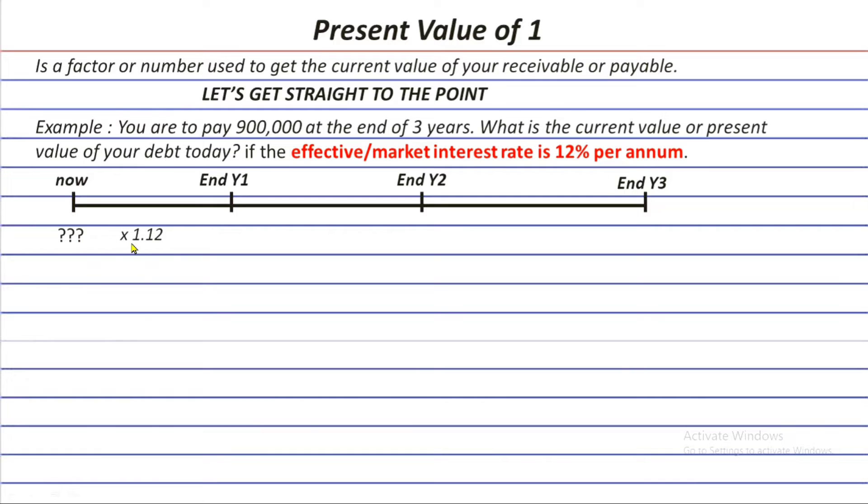It will grow at the end of the first year. Times 1.12 for the first time. And then, it will grow again at the end of the second year. Times 1.12 again. And it will grow for the last year at the end of the third year. Times 1.12 until it becomes 900,000.